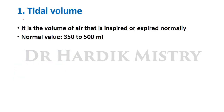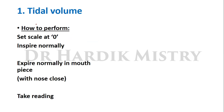First we begin with tidal volume. What is tidal volume? It is the volume of air that is inspired or expired normally. Normal value is 350 to 500 ml. To measure it with the Hutchison's spirometer: set the scale at zero, inspire normally, then expire normally into the mouthpiece with nose closed, and take the reading.